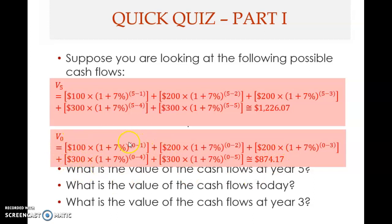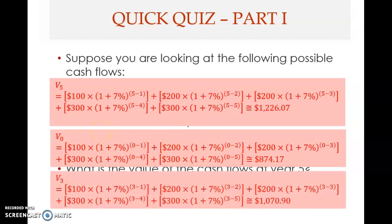So that is the answer for the second question. Next, what is the value of the cash flows at year three? There are many ways of doing this. This is the formula — the value of these cash flows at year three. The cash flow at time one is 100, multiplied by one plus r raised to the power of n minus t, where t is when this cash flow occurs — at the end of year one.